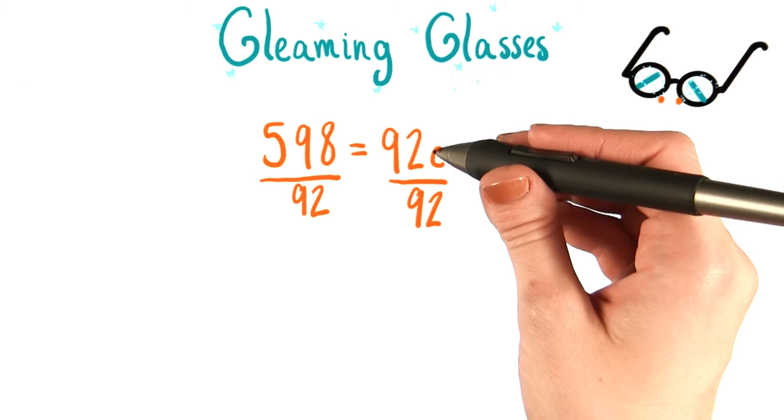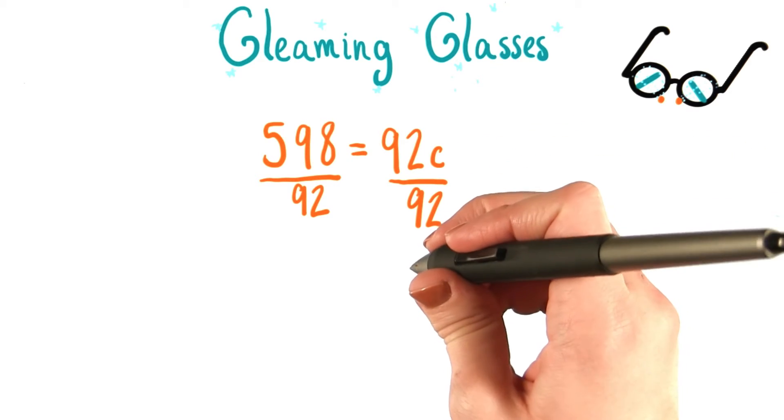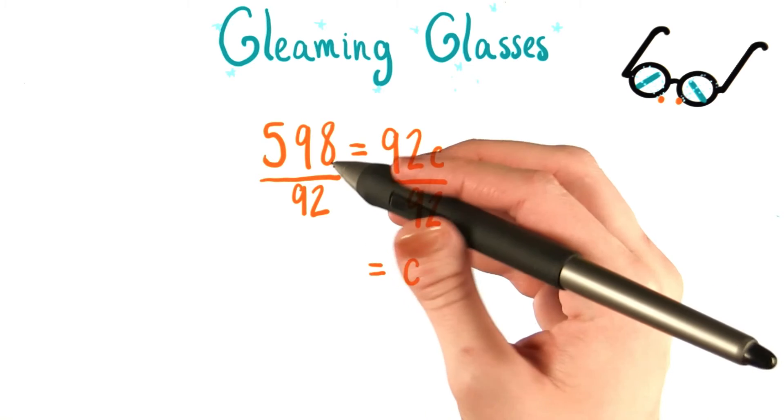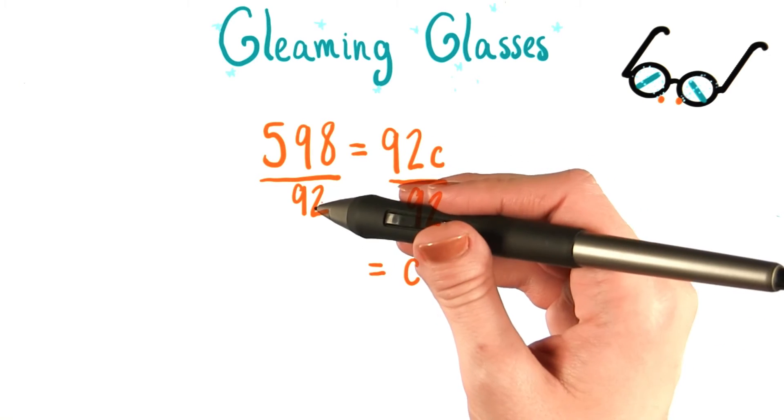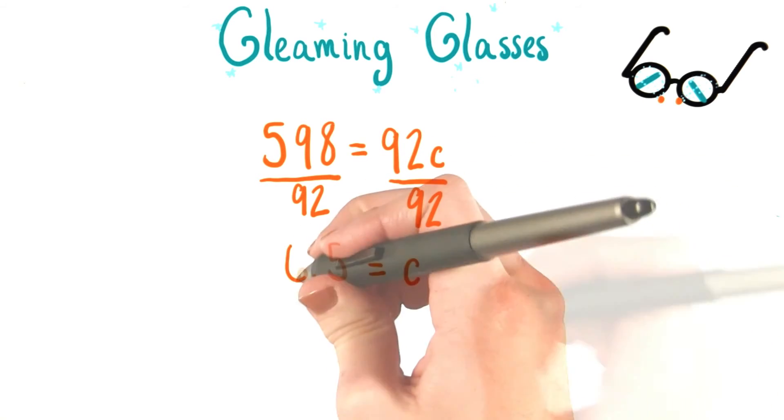Looking at the right side, 92c over 92 is, as we wished, just c. And on the left side, 598 divided by 92 is equal to the number 6 and a half.